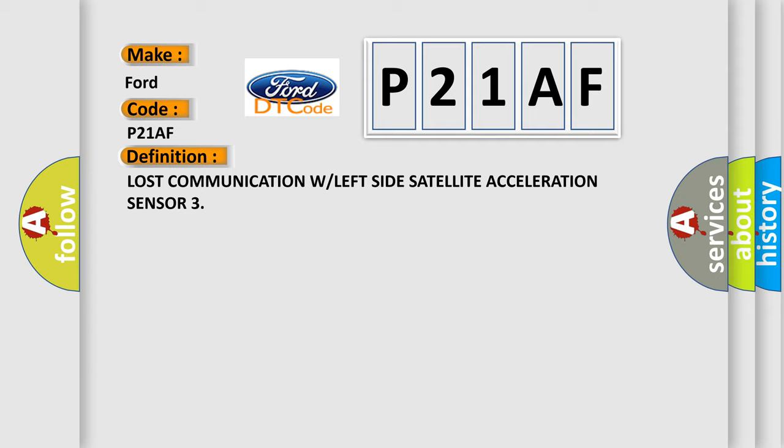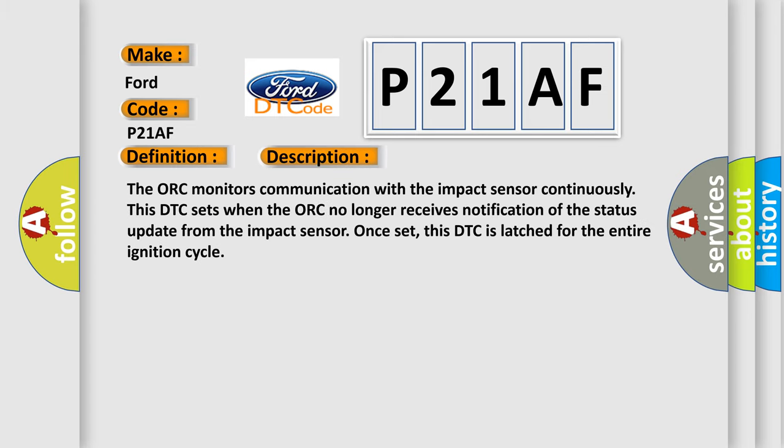Here is a short description of this DTC code. The ORC monitors communication with the impact sensor continuously. This DTC sets when the ORC no longer receives notification of the status update from the impact sensor. Once set, this DTC is latched for the entire ignition cycle.